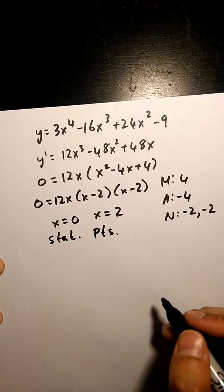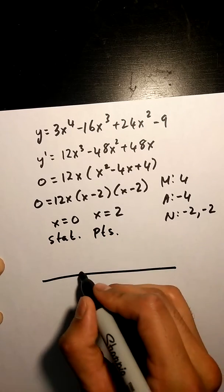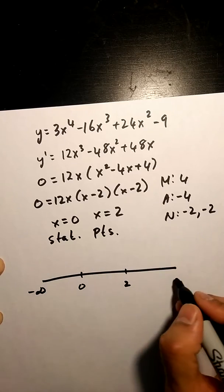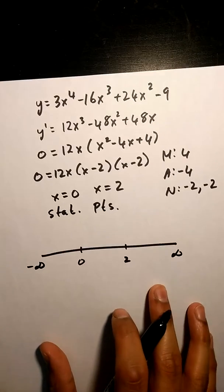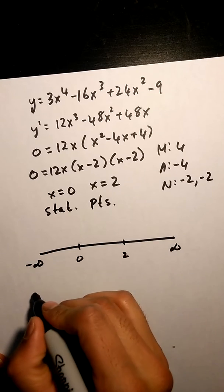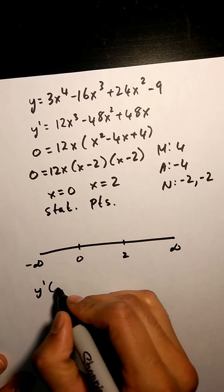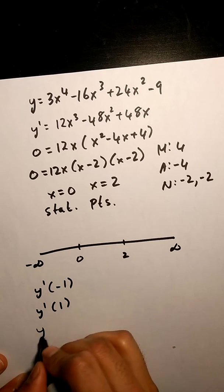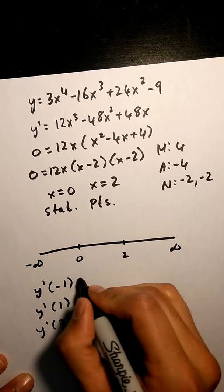Once I get my stationary points, I put them on my number line and I find my intervals of increase and decrease by doing y' of negative 1, y' of 1, and y' of 3.